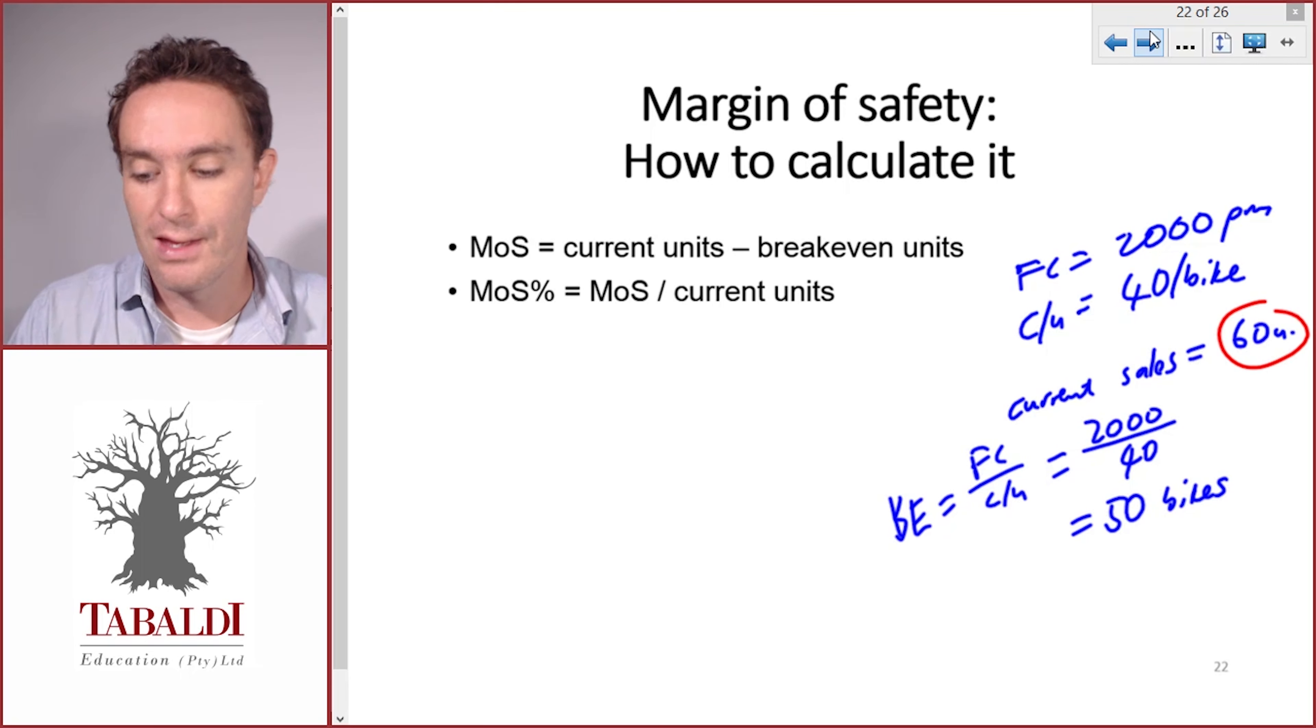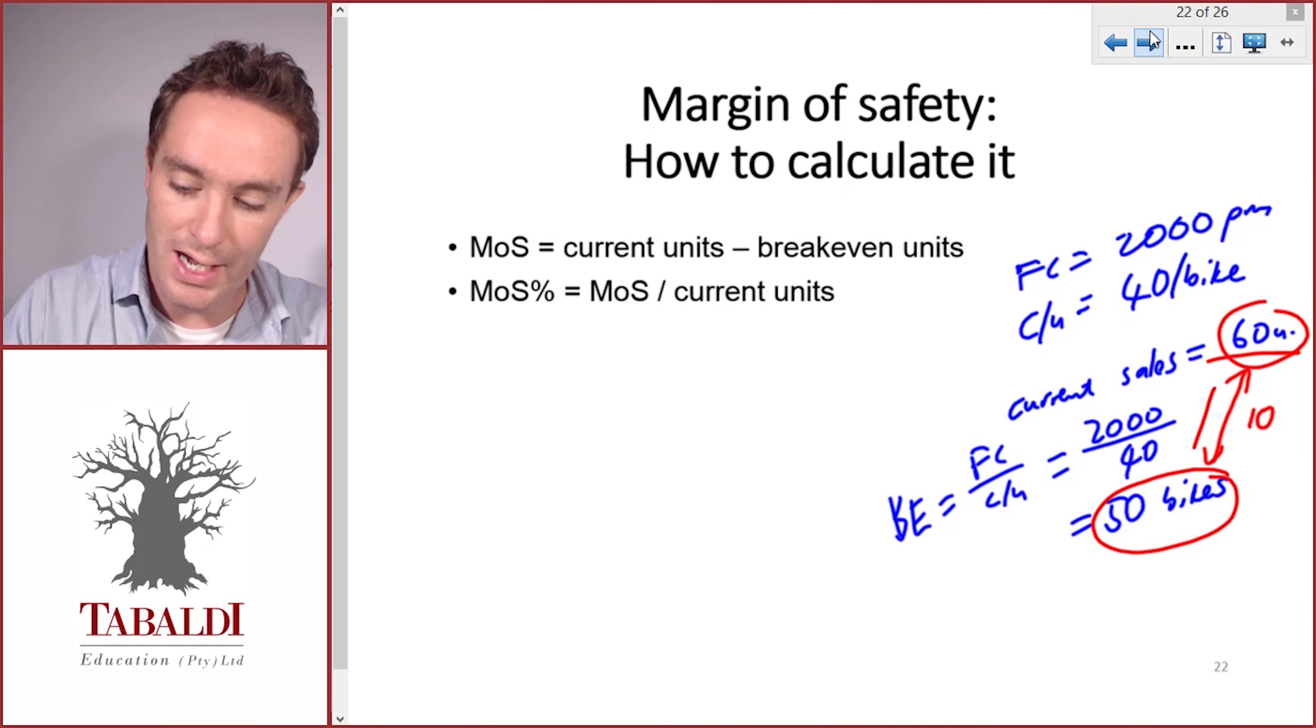Our break-even point is 50 bikes, so the difference between the two is our margin of safety. Our sales could drop from the current level of 60 all the way down to 50 bikes before we start making a loss. The 10 bikes that we sell in excess of the 50 is what contributes towards our current profit.